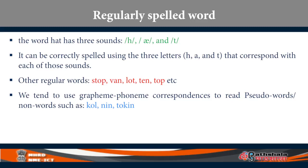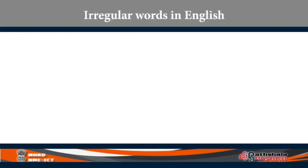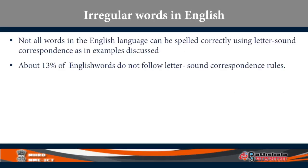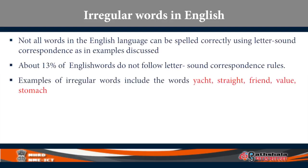English does not have only regular words. There are some irregular words — at least 13 percent of English words have irregular spellings. For instance, words like 'yacht' spelled Y-A-C-H-T, 'rate,' 'friend,' 'value,' 'stomach.'